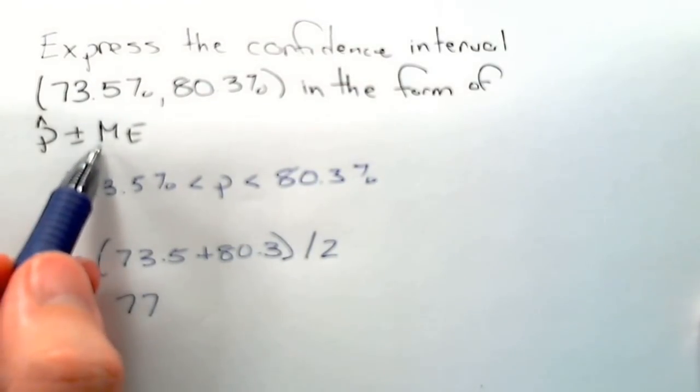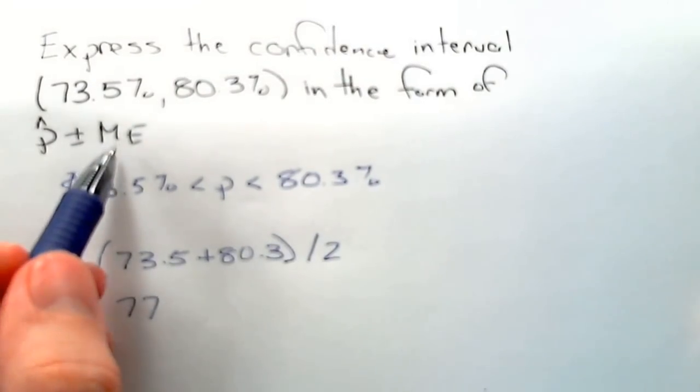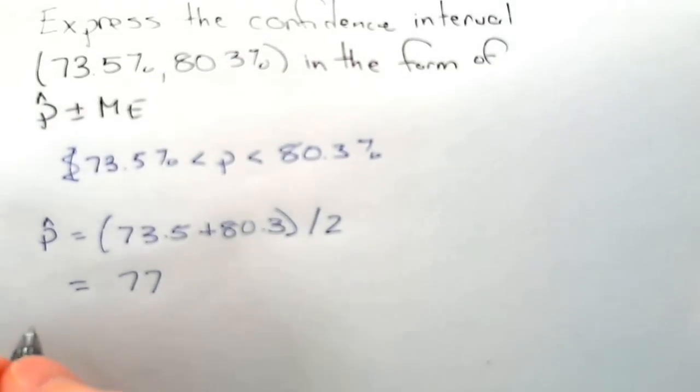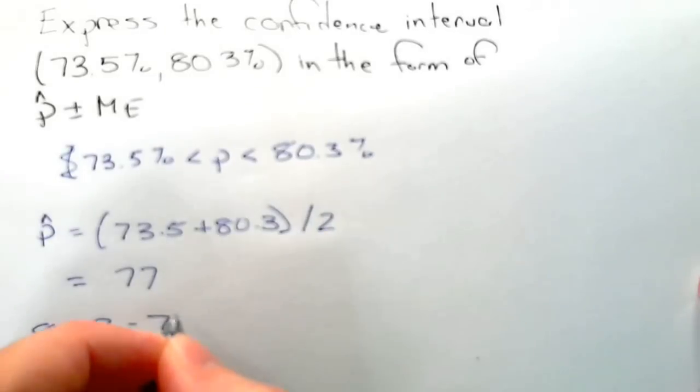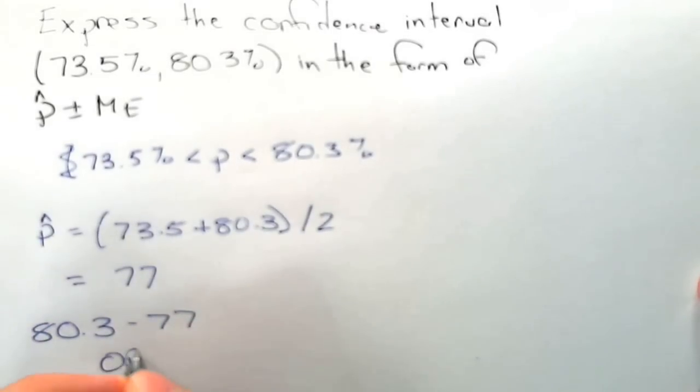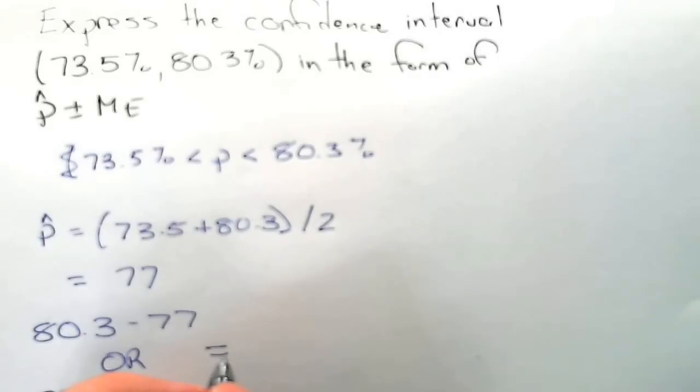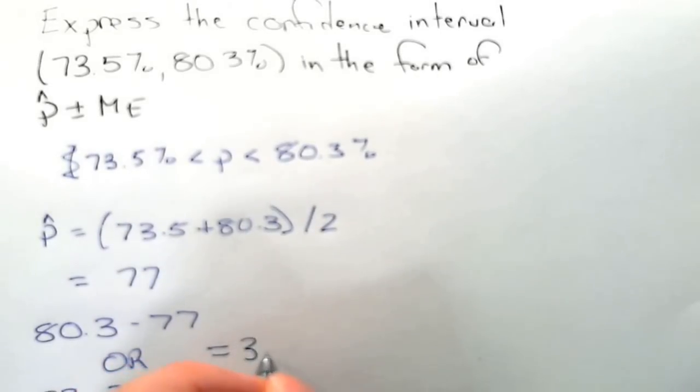That's the difference of p hat from each of these two end values. So I could do 80.3 minus 77, or we can do 77 minus 73.5. In both cases, these are equal to 3.4.